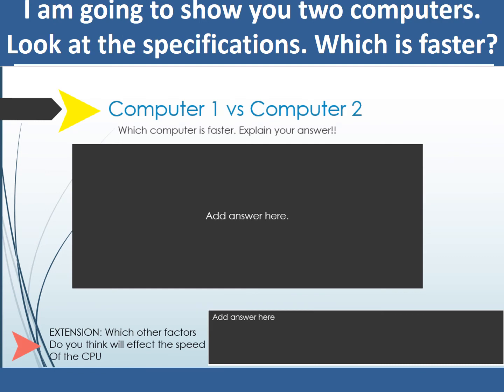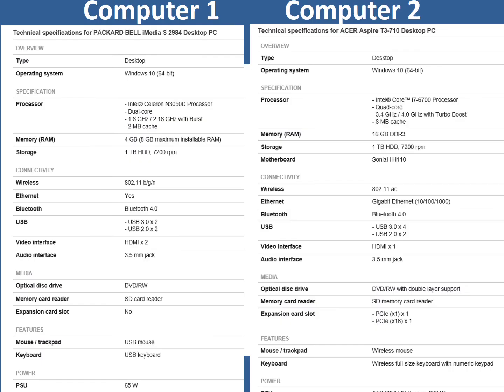I'm about to show you two different computers and I want you to decide which one is faster. Explain your thinking in the first box, and there is an extension question about what other factors, apart from the three C's, you think will affect the speed of the CPU. Here are the two computers to compare — please pause your video now and go and answer those pages in the workbook.